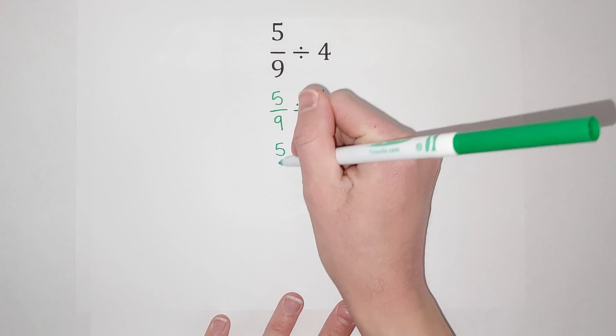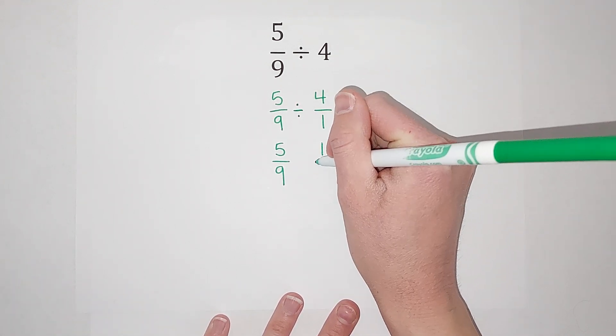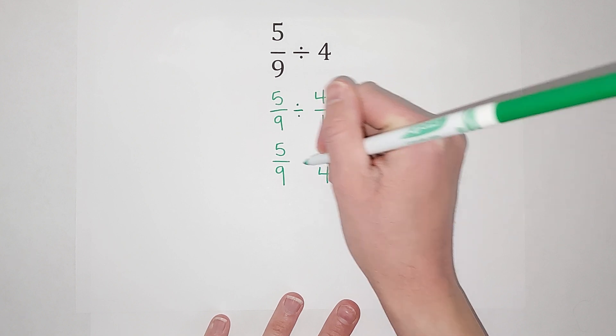But here we go. We're going to take five ninths, flip our second fraction so it is one fourth and multiply.